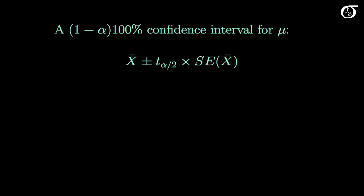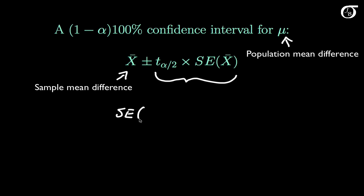To construct a confidence interval for mu, the population mean difference, we're going to use our usual methods. We're going to start with our sample mean difference, and then we're going to add and subtract this margin of error. The margin of error again is made up of the t value times our standard error.